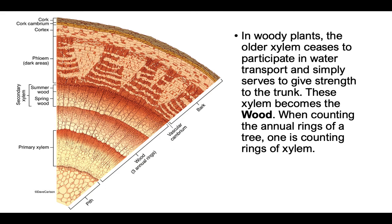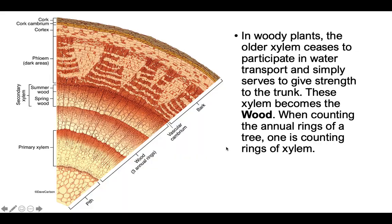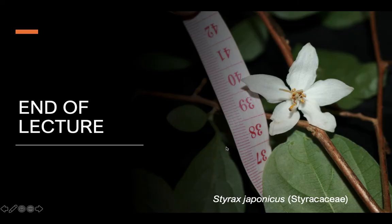Moreover, as the plant grows older, the pith may no longer be visible, especially for eudicots — the pith will be crushed and left as an empty space within the plant. End of lecture. Thank you.